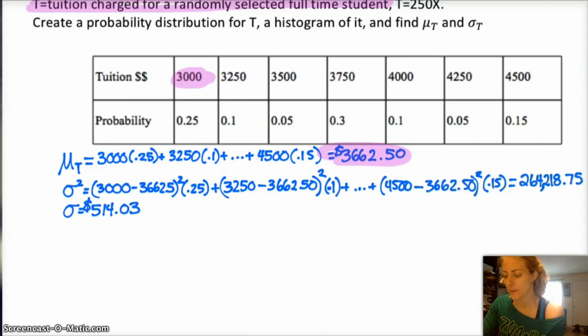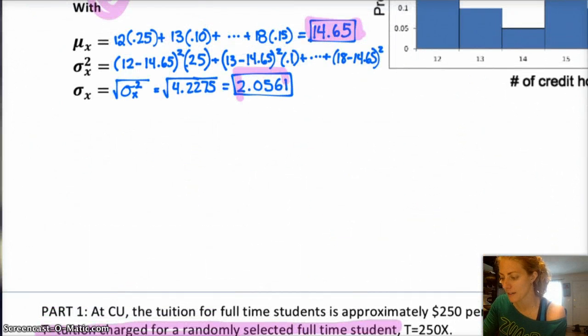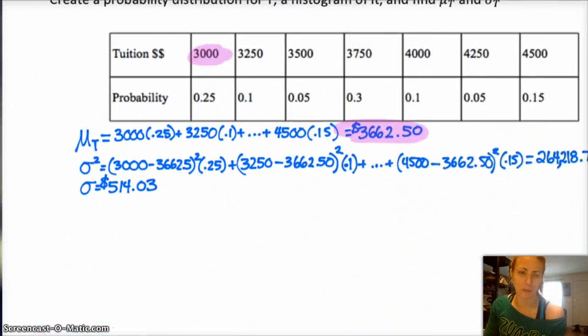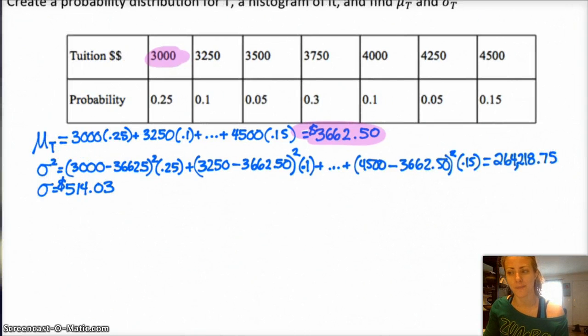And the same thing with sigma, okay? Sigma was 2.0561, and if you multiply that by 250, you should get $514.03 or 2 cents, depending on your rounding. So that does work. Just be careful because you are not multiplying sigma squared by 250. You're multiplying it by 250 squared. So just kind of keep that in mind.